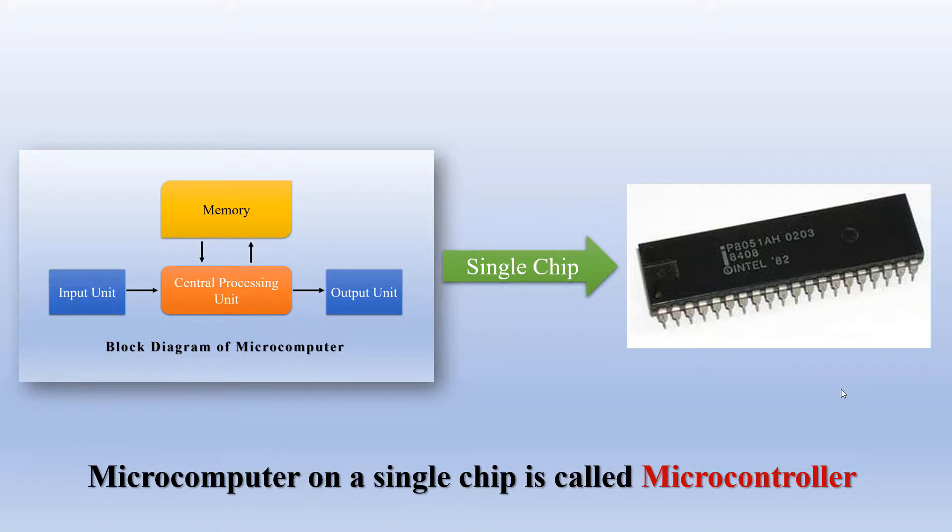This has become possible because of very large scale integration where it was step by step made possible to integrate all these things on a single chip. So microcontroller is a microcomputer on a single chip while microprocessor is a CPU on a single chip.